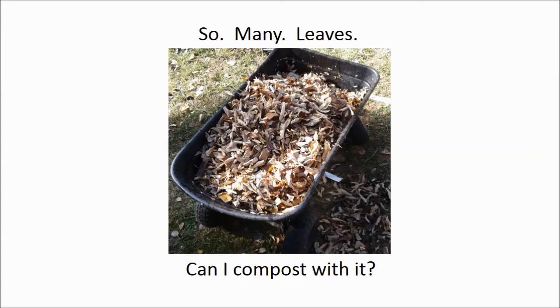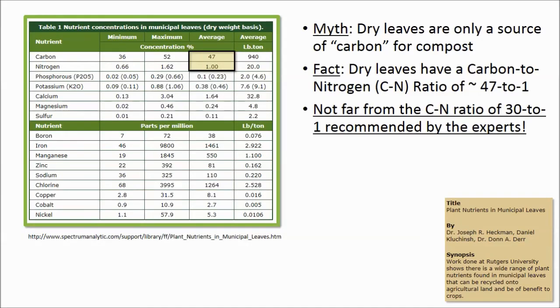But are they useful for compost? In fact, they are. I've seen some information sources that call dry leaves 'carbon' in the compost equation. In fact, chemical analysis shows that leaves have a carbon to nitrogen or C:N ratio of around 47 to 1. This isn't far from the 30 to 1 ratio that's often recommended by the composting experts. With just a bit of additional added nitrogen, I'll show you that leaves alone can produce hot compost.